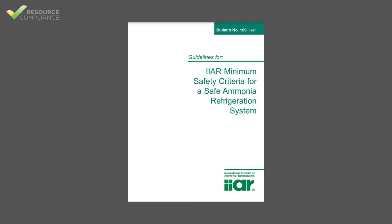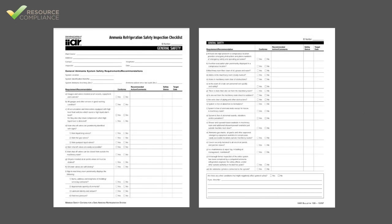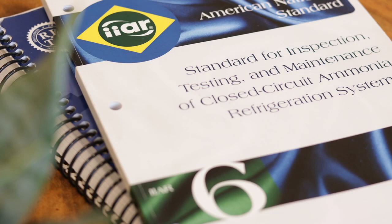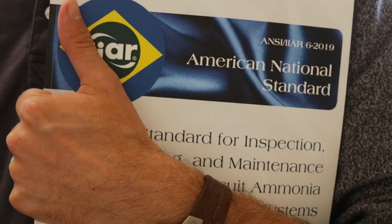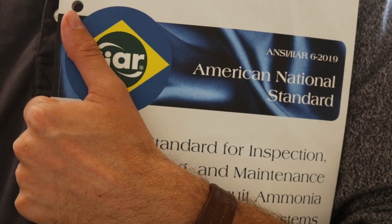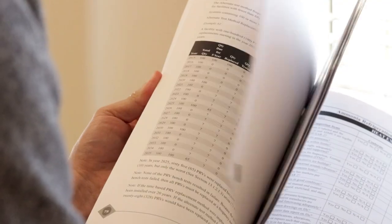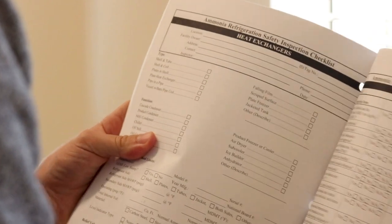For years, the Bulletin 109 checklists served as the gold standard for documenting annual mechanical integrity inspections for ammonia refrigeration equipment. In 2019, IIAR retired Bulletin 109 when the first edition of Standard 6 was published. Standard 6 addresses the minimum requirements for inspection, testing, and maintenance of ammonia refrigeration systems and includes slightly altered versions of the B109s in Appendix B.